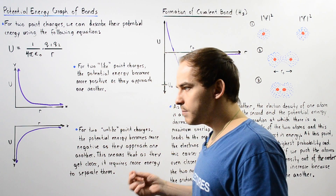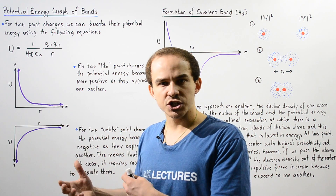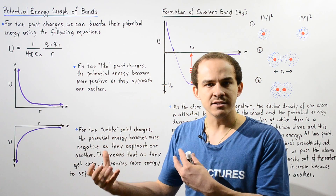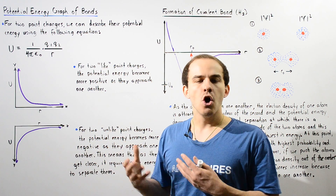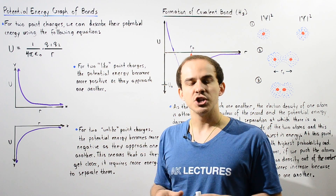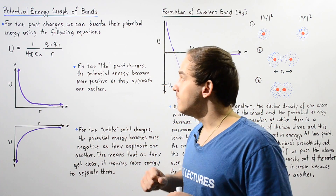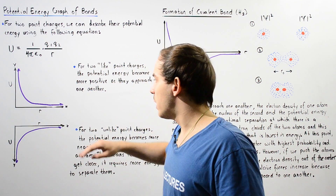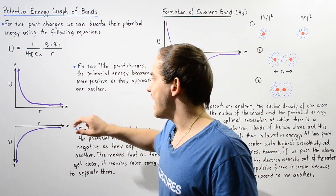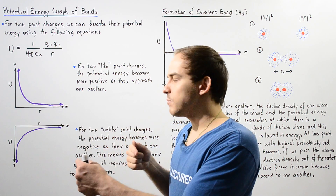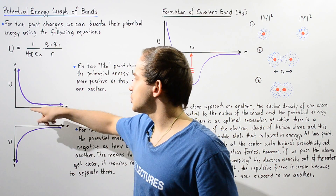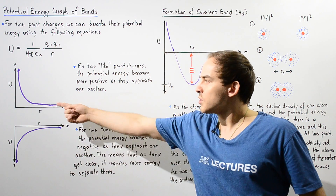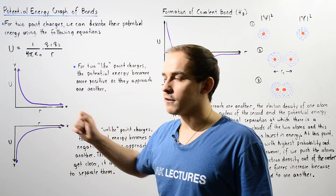Now, let's suppose we have two charges that are like charges — either two positive charges or two negative charges. In such a case, if we graph the potential energy U on the XY axis, where the X axis is the separation distance R and the Y axis is the potential energy U, we get the following curve.